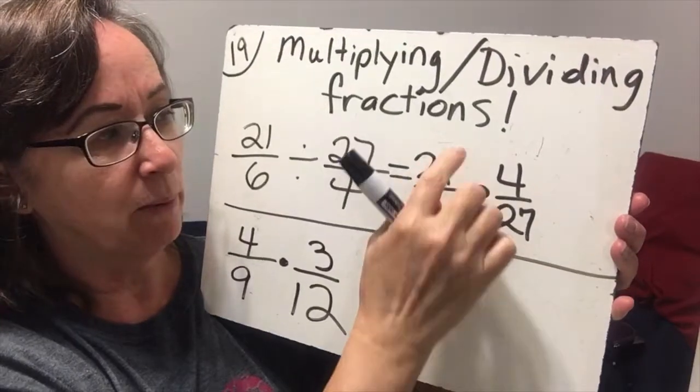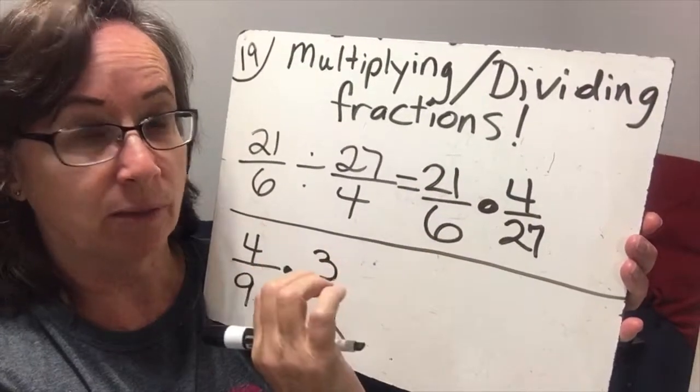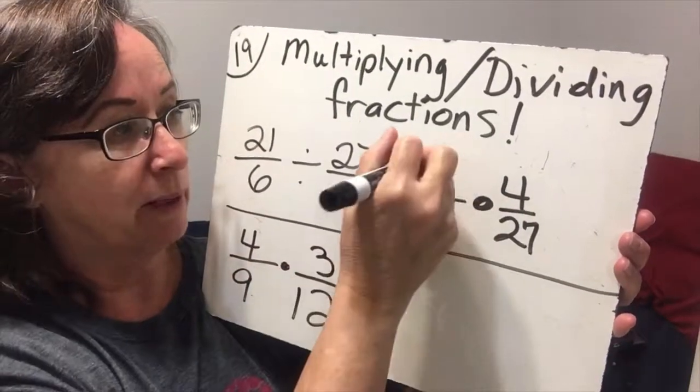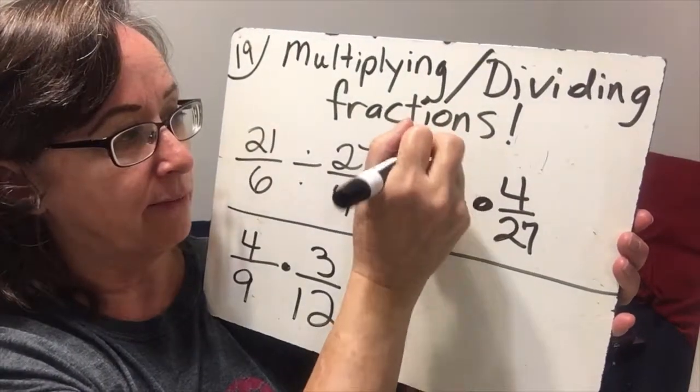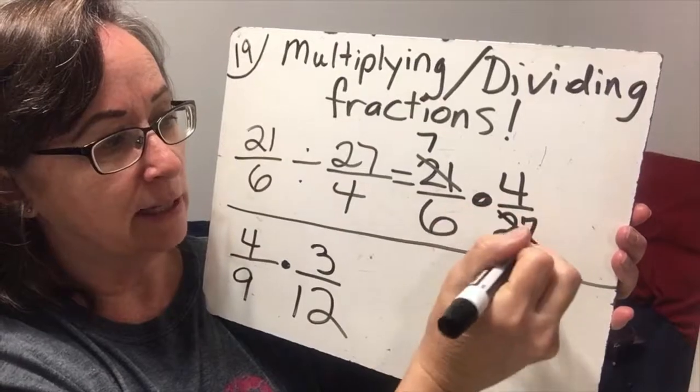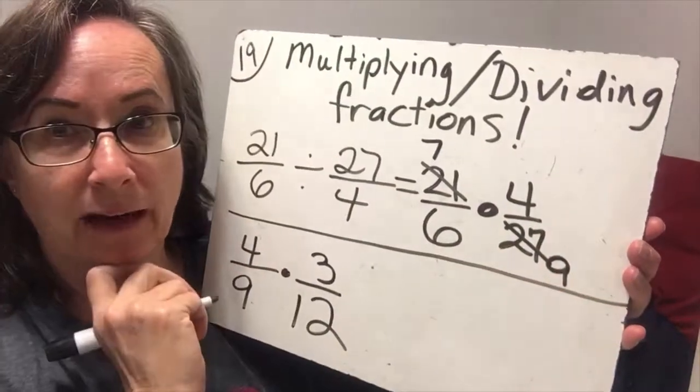And 21 has a 3 and a 7 in it. It does not cancel. 21 has a 3, but 27 also has a 3. So why don't we go ahead and do that. 21 is 3 times 7, and 27 is 3 times 9. That helps.